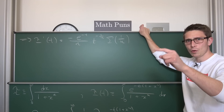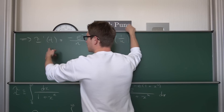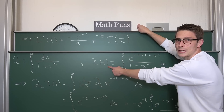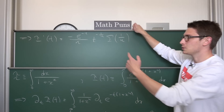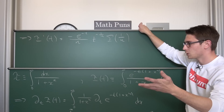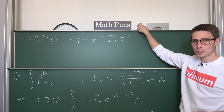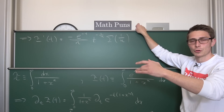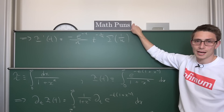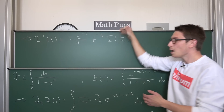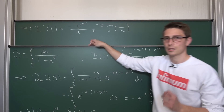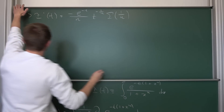We are now at the derivative of I with respect to t. Where we want to go back to is I with respect to t itself, meaning we need to integrate. This is a differential equation, so we need to integrate it, and we are going to apply boundary conditions — upper and lower bounds to our integral — very smartly, such that we end up with the integral that we actually desire. Let us go through the thought process here.